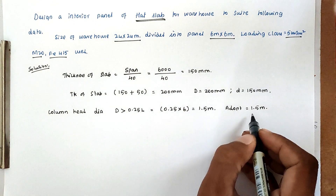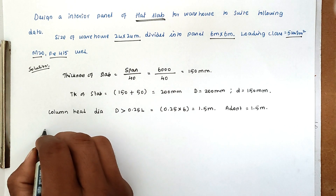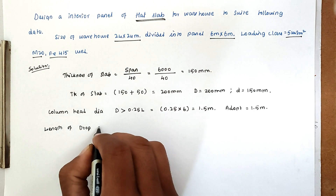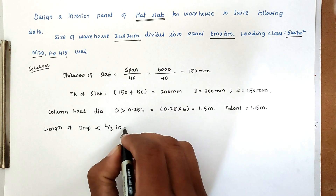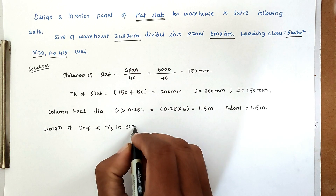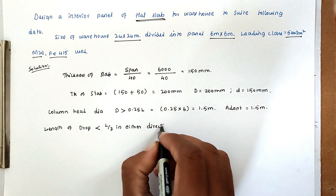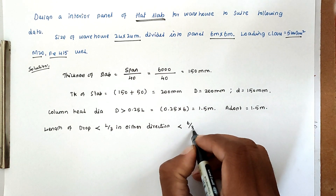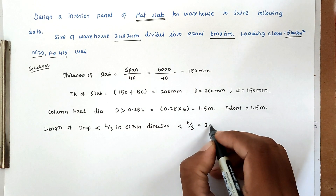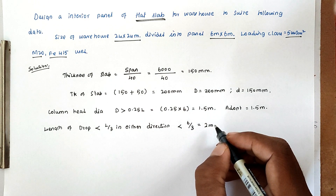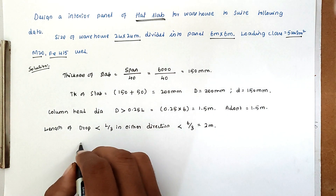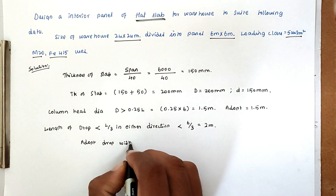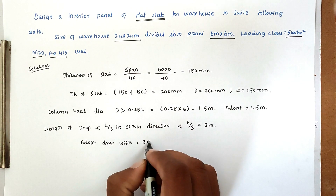Then for the length of drop: the drop length should be less than L by 3 in either direction. Since both directions are the same, that is 6 divided by 3 equals 2 meters. We adopt a drop width of 3 meters in all strips.